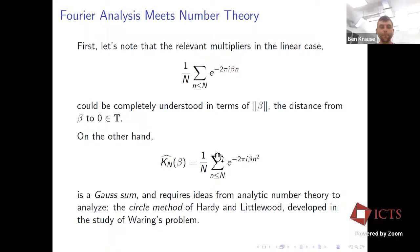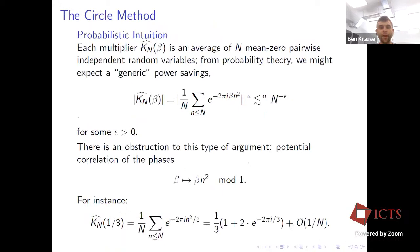In the linear setting — replacing n² with n — we can fully understand the multiplier in terms of the distance from β to zero mod one. This is a geometric series summing to something like 1/(N·‖β‖), which tells us that when β is much bigger than 1/N the multiplier tries to be zero, and when β is much smaller than 1/N we can Taylor-expand the phase and see the multiplier is close to one. On the other hand, the quadratic multiplier is much more subtle — it's a Gauss sum and requires analytic number theory. To get your hands on this multiplier you need to use the Hardy-Littlewood circle method, invented to study Waring's problem.